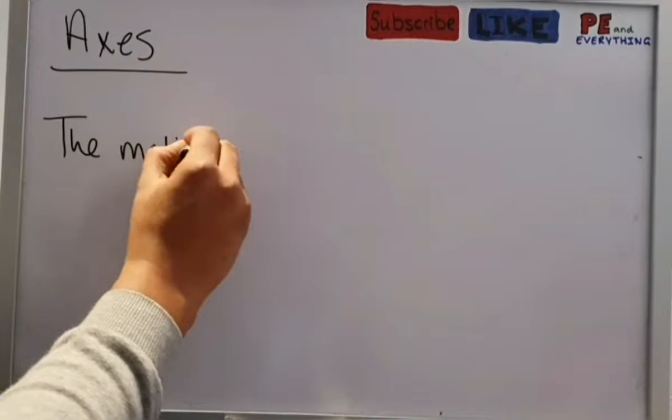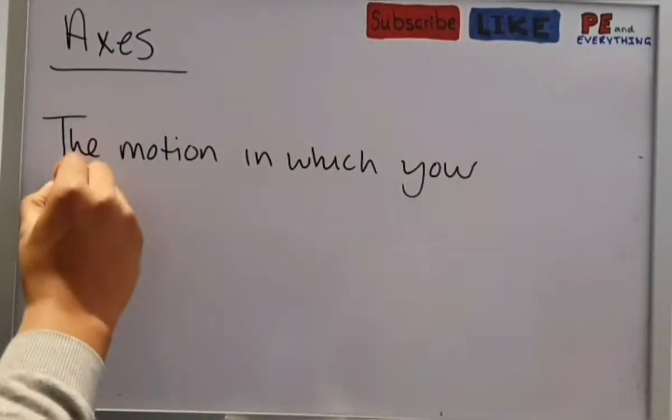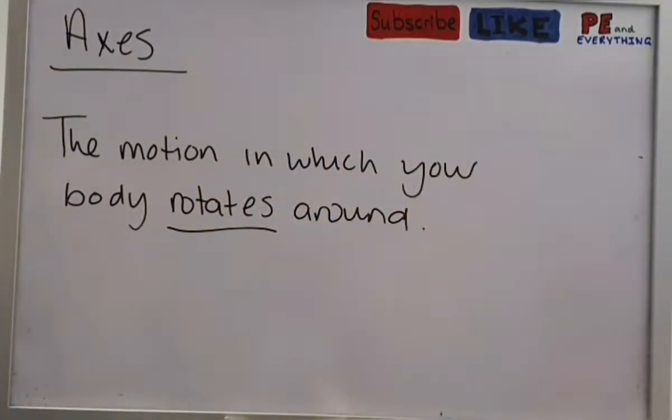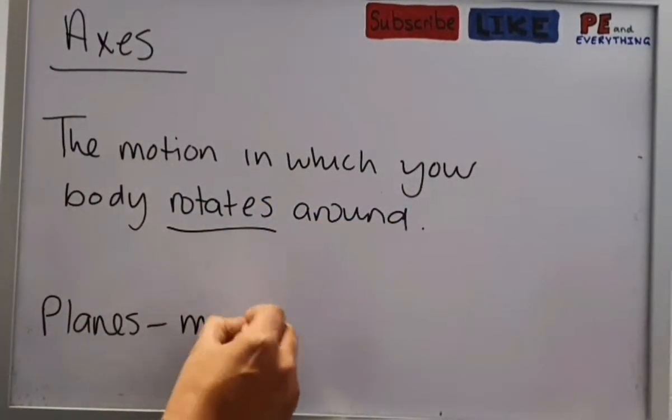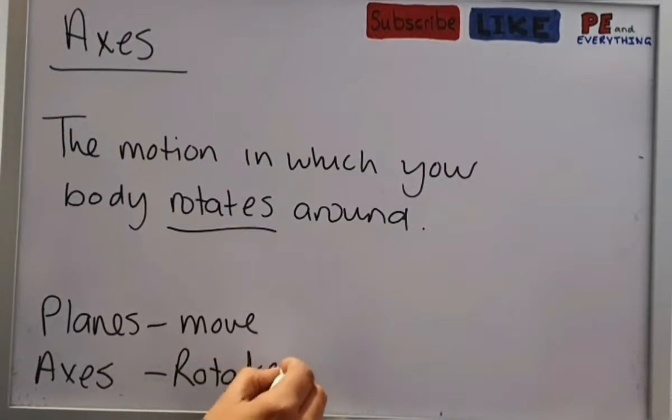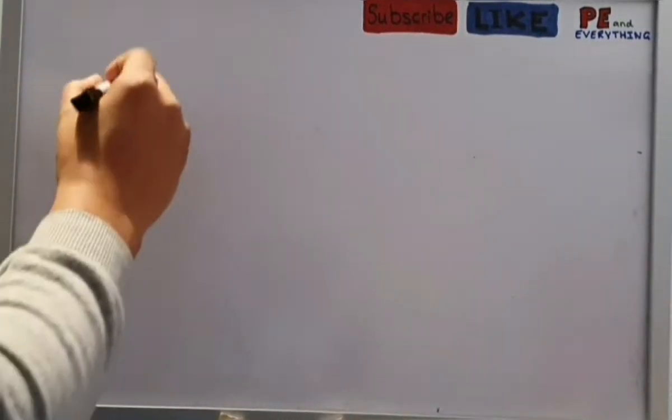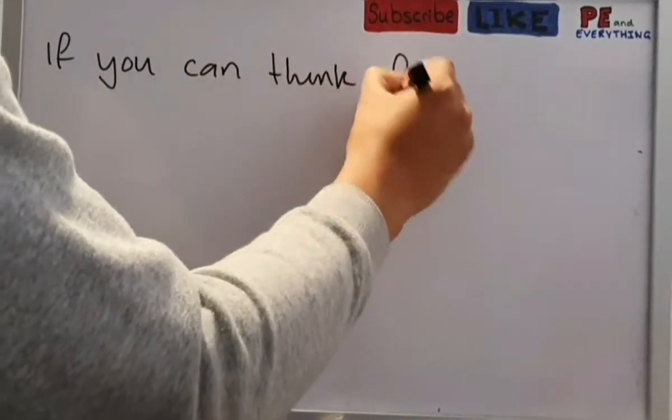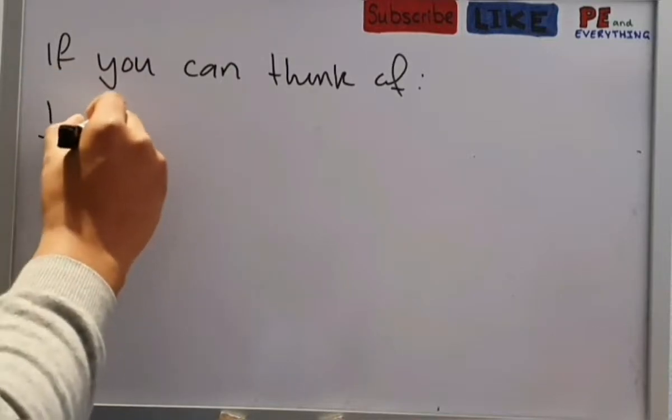Now, axes. The definition of axes would be something like the motion in which your body can rotate around. Rotate, that word rotate. So don't get it twisted, don't get it mixed up. Planes move, axes rotate. Direction of movement, direction of rotation.